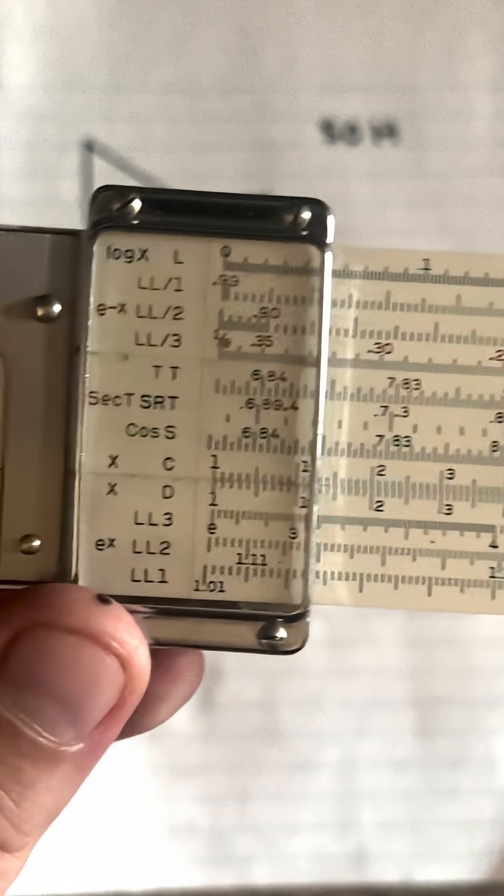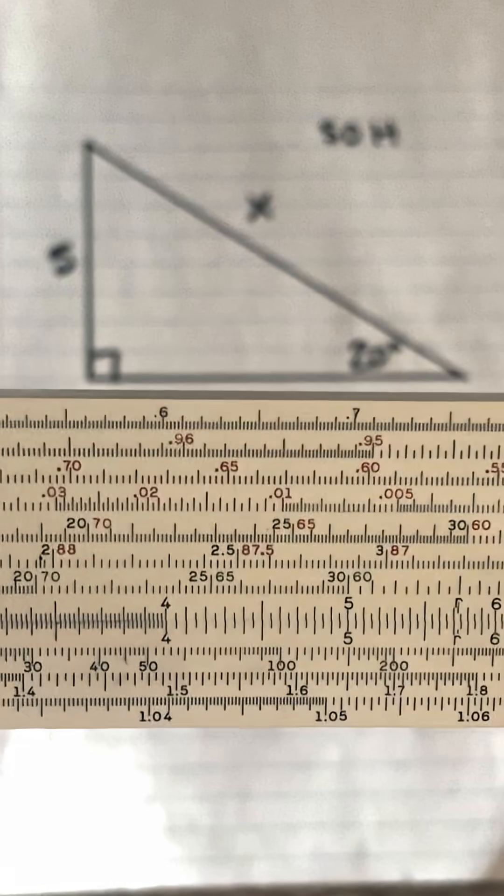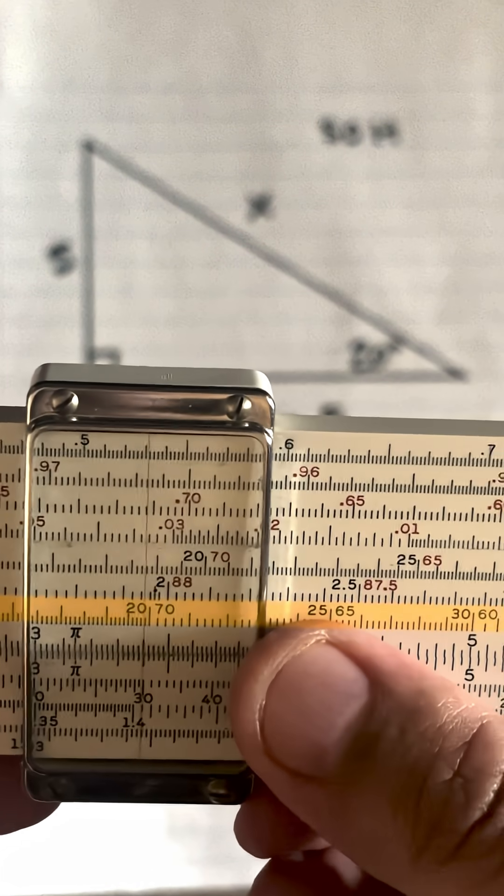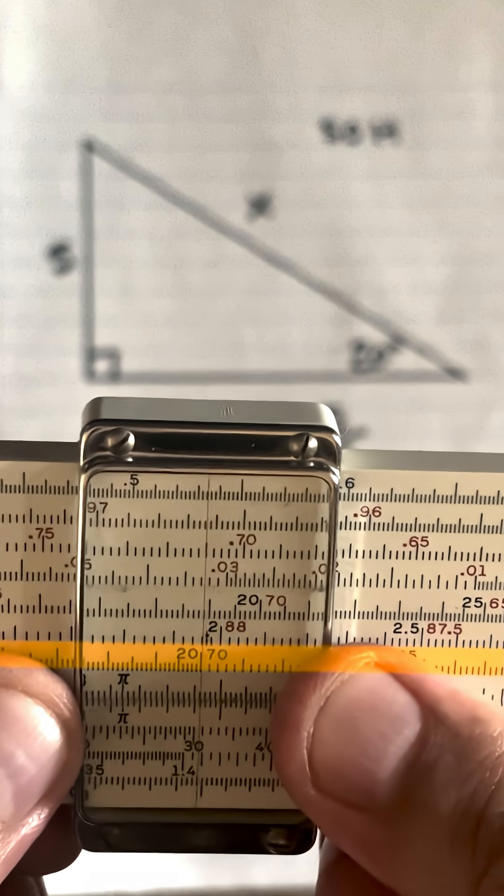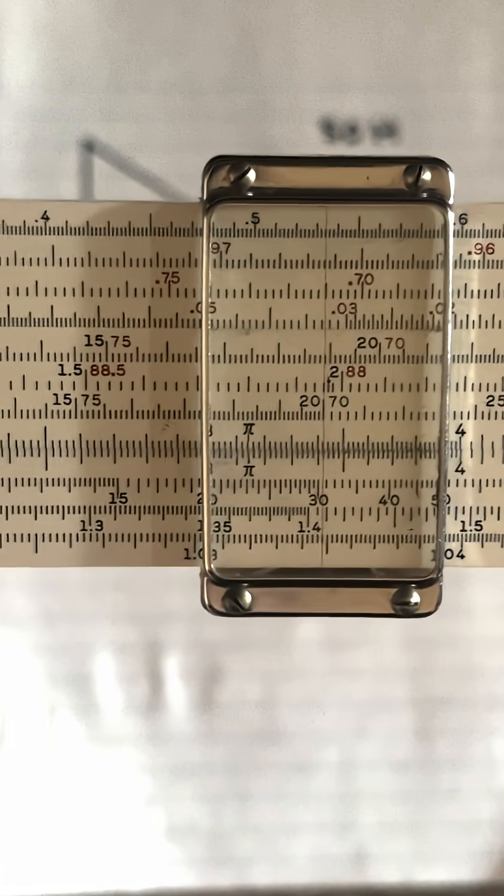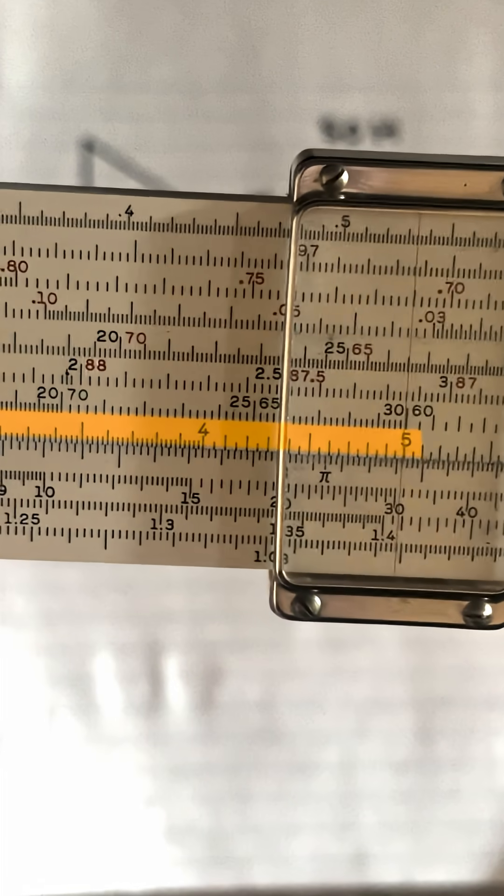We'll go to the sine scale and put it on 20 degrees right there. Then we'll divide by 5, so on the C scale, move the 5 below 20.